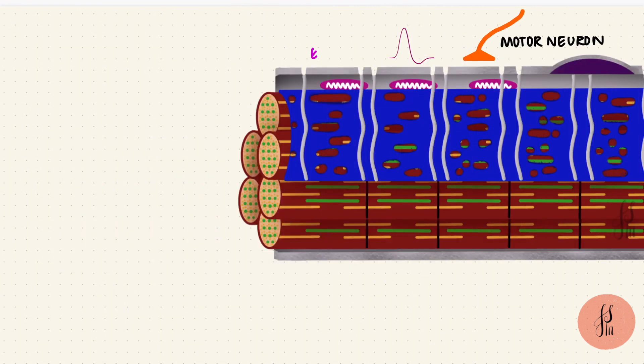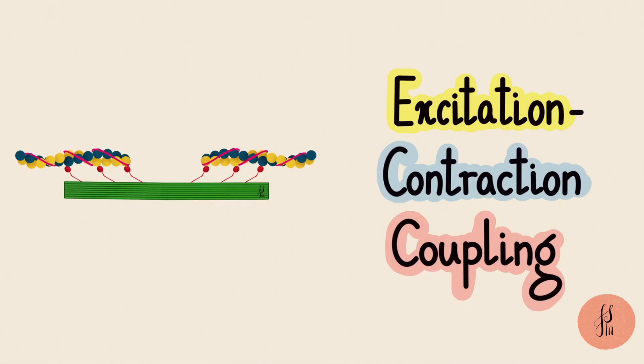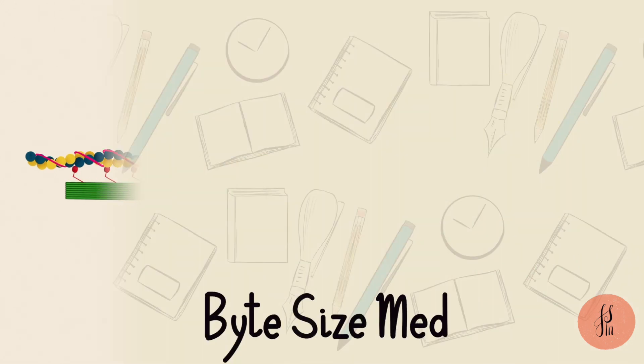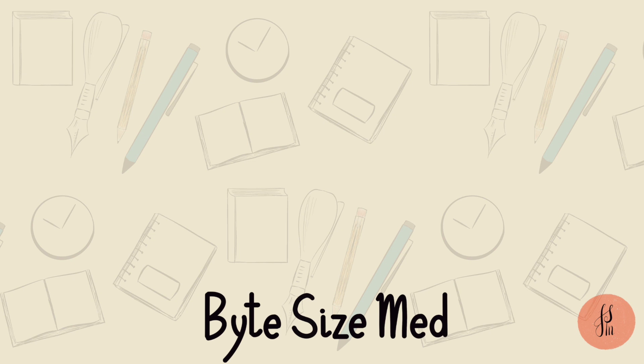When another action potential arrives, the process will repeat. And that is excitation contraction coupling for skeletal muscle contraction. If this video helped you, you can give it a like and subscribe to my channel. Thanks for watching and I'll see you in the next one.